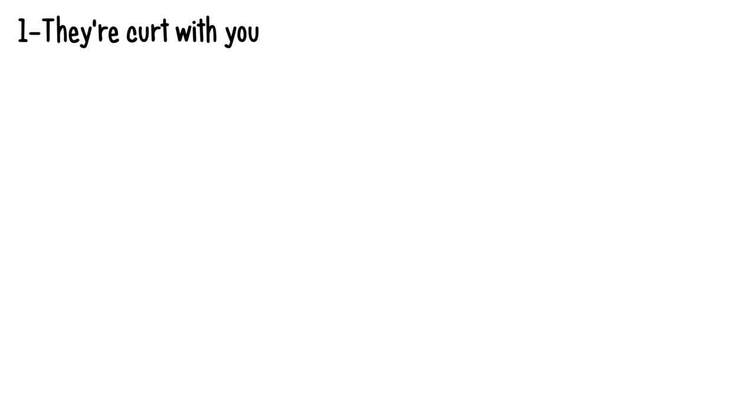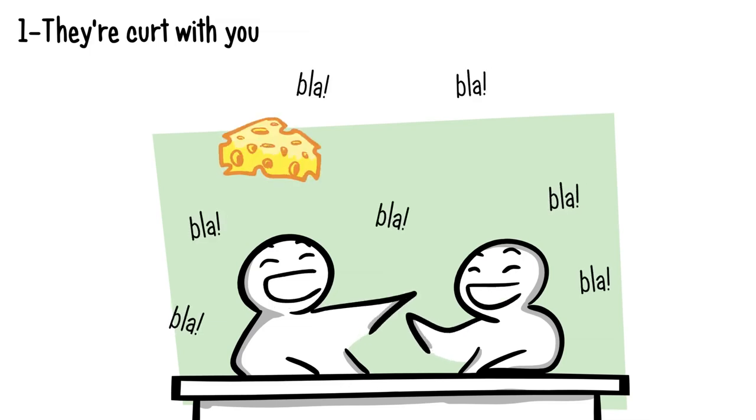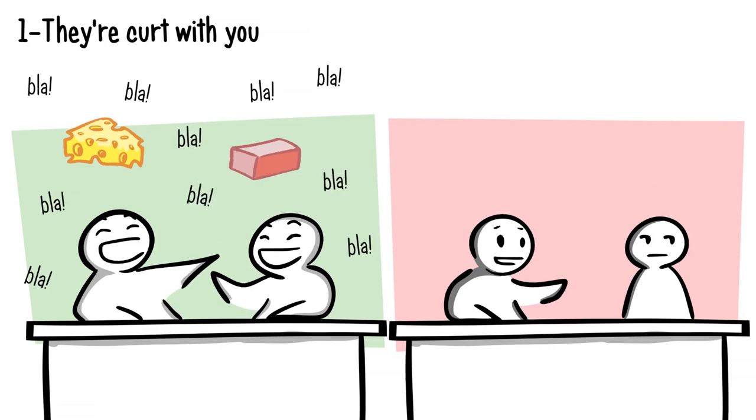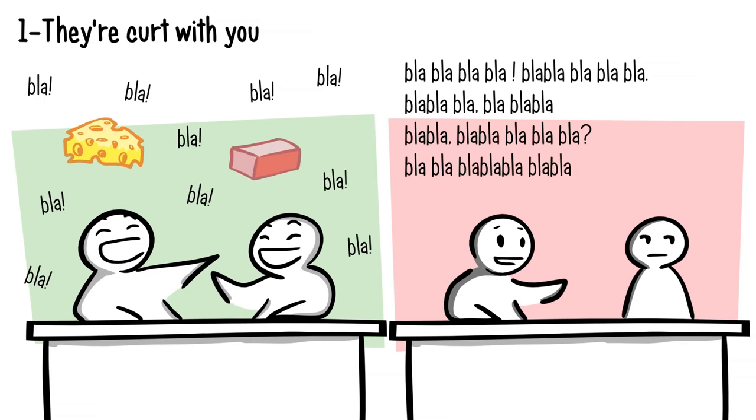Number 1. They're curt with you. Do you ever feel like you can talk to your best friend 24-7? Even if the two of you aren't having a deep philosophical conversation, talking about something as silly as cheese or bricks seems entertaining, right? But when someone dislikes you, it's the complete opposite. They cut the conversation short. If you ask them how their day is going, they'll give you one-worded answers like fine or okay. It becomes clear they don't want to talk to you.